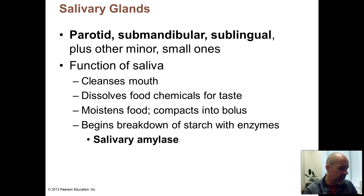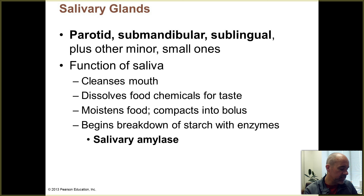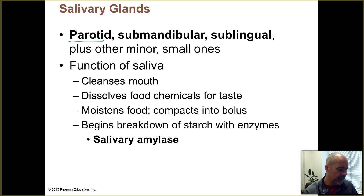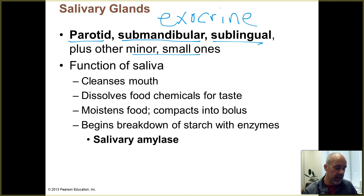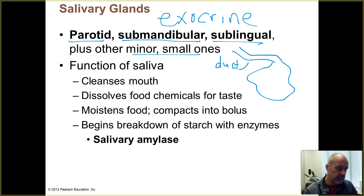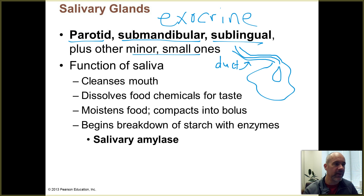A little bit about the salivary glands. You have the parotid glands — those are the big salivary glands on either side in your cheek area. Then you have the submandibular salivary glands, which are beneath the mandible, and the sublingual glands, which are below the tongue. Lingual always refers to the tongue, like language. There are some other minor small ones as well, but those are your main salivary glands. They produce saliva and are exocrine glands, not endocrine glands. Exocrine glands have a duct that carries a secretion to a surface — in this case, the inside of the mouth.